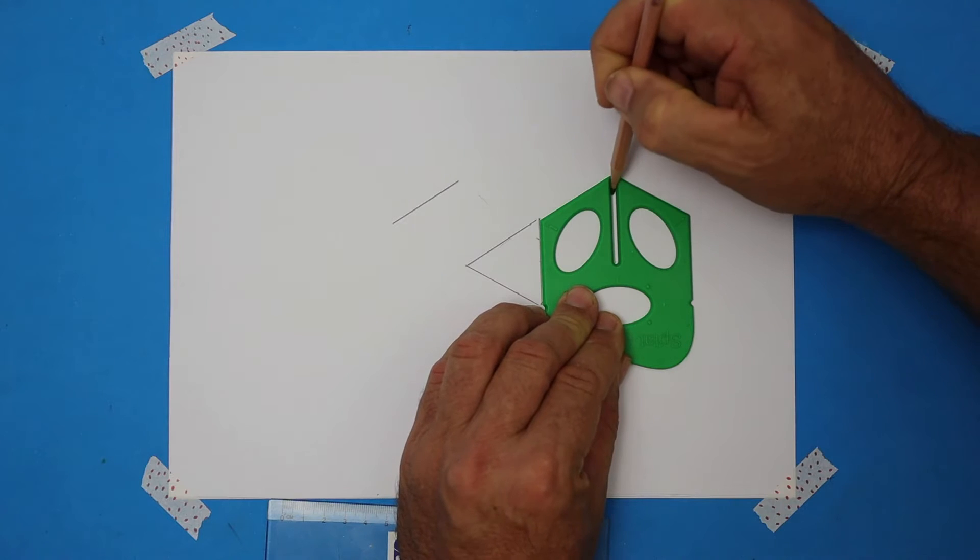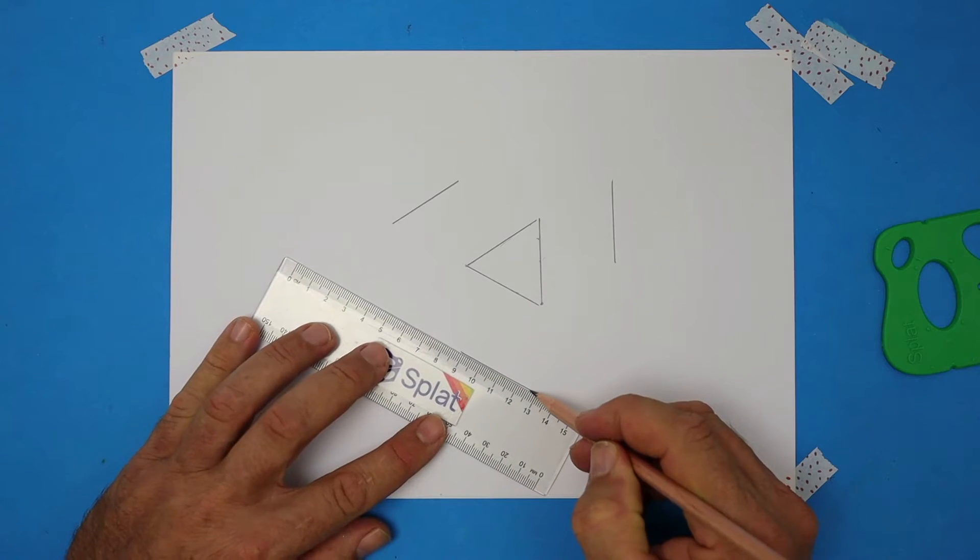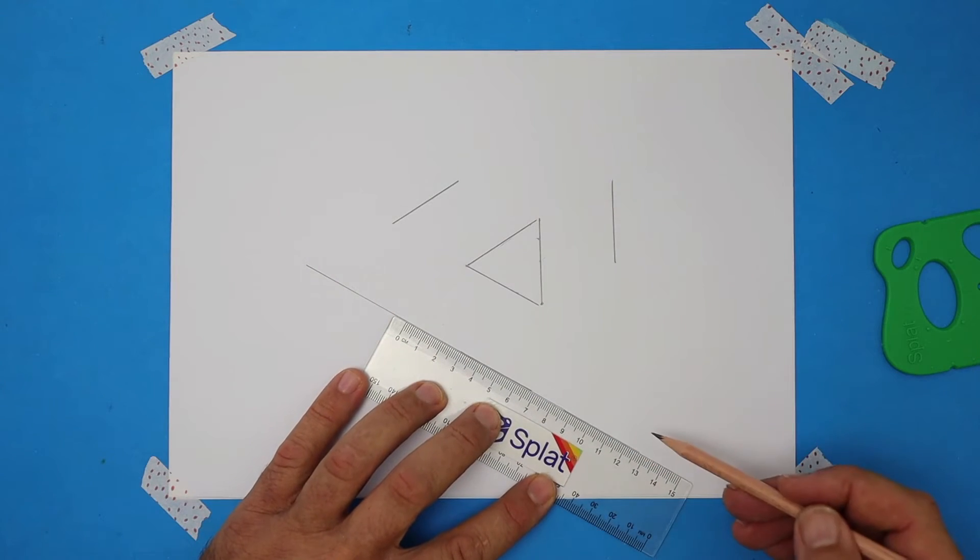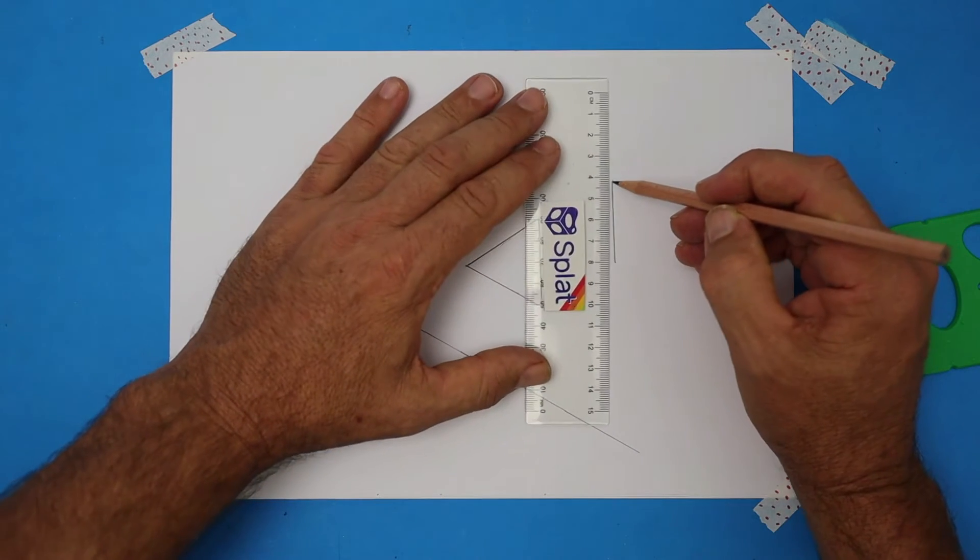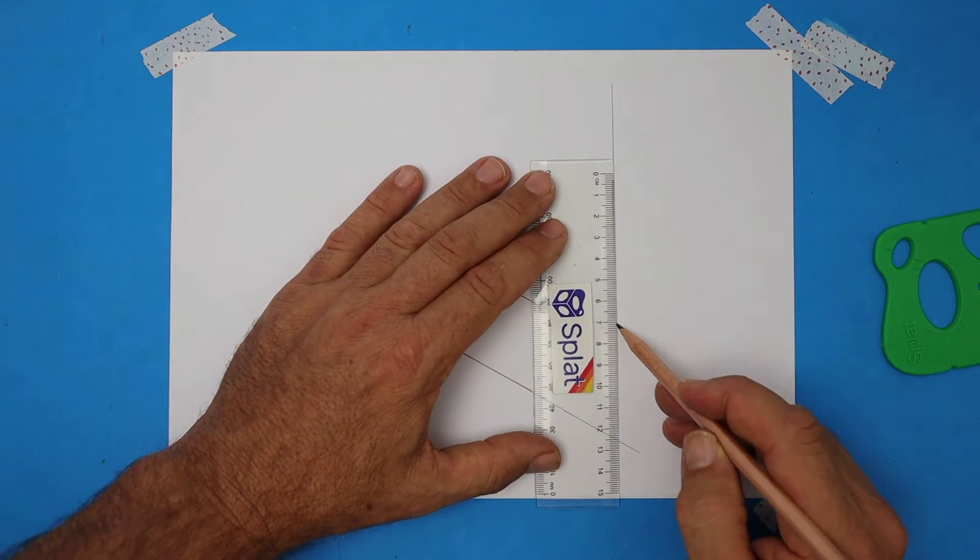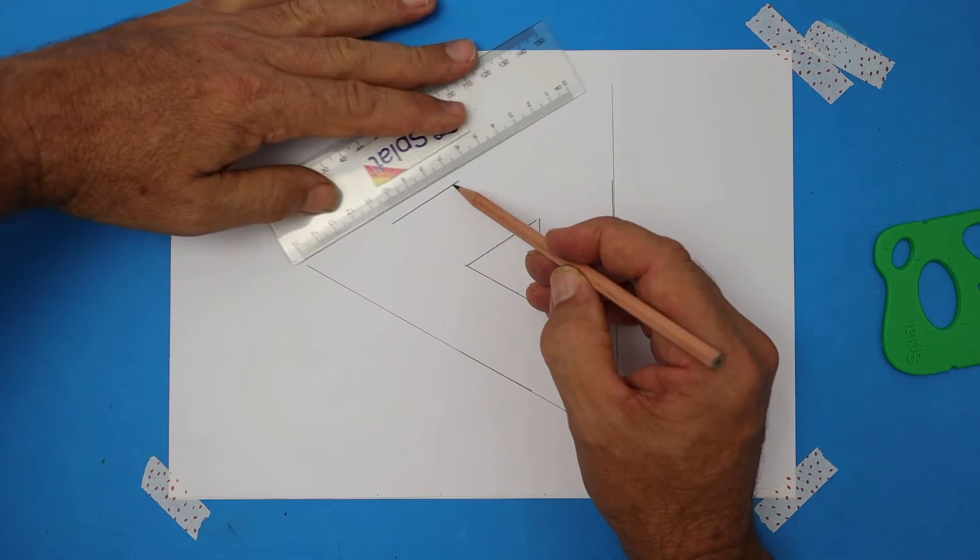Those lines that we've just drawn will need to extend. So use a long ruler, maybe longer than the one I'm using. I'm sliding along there. So we do a guideline and on the second edge, let's repeat the same thing for this line.